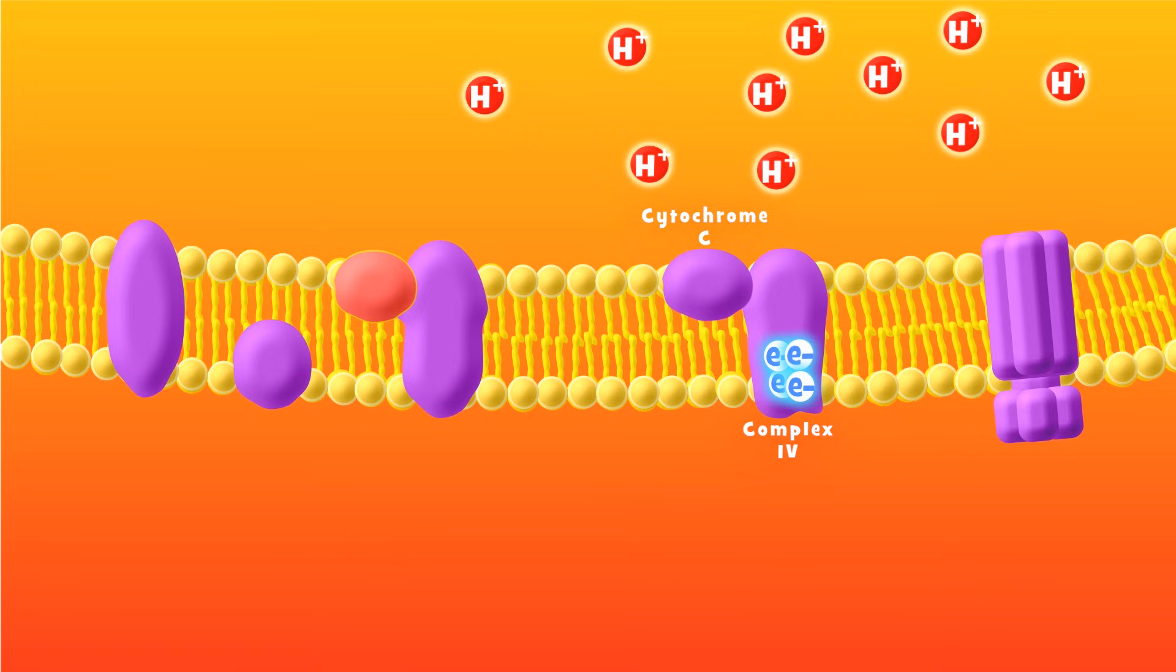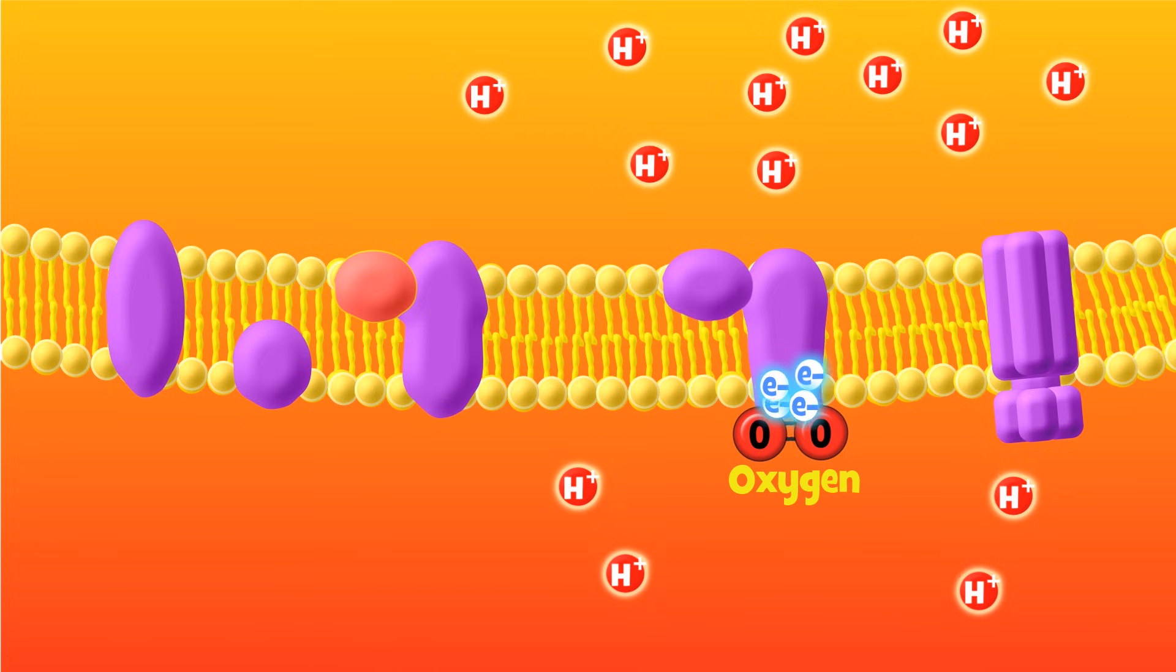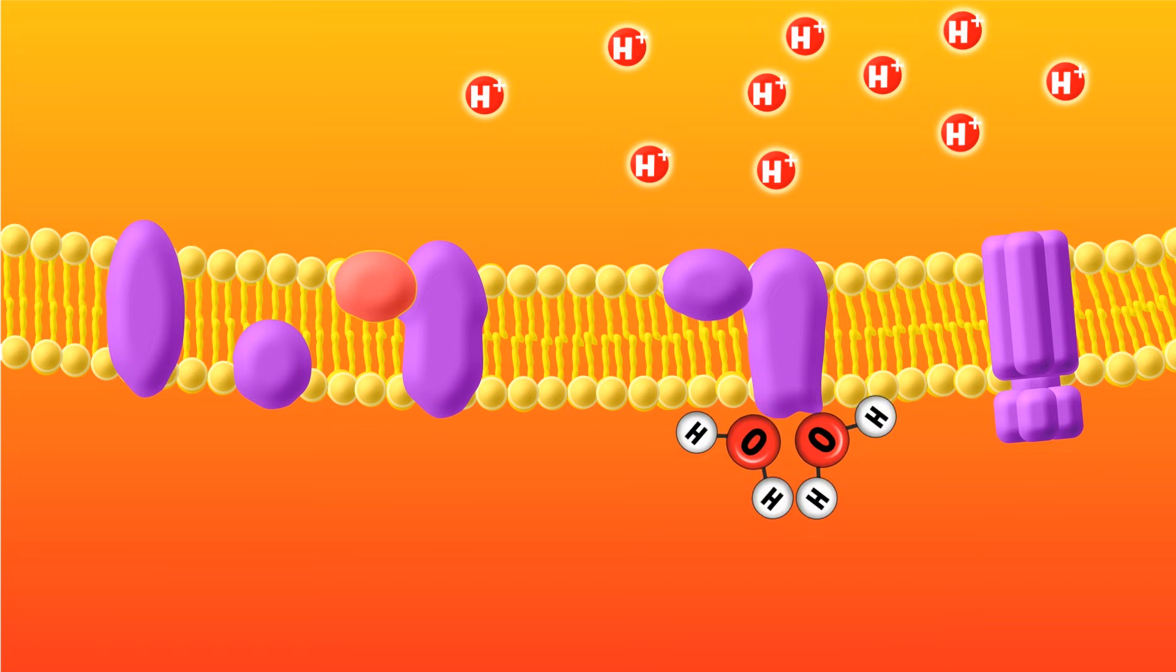Now the electrons need somewhere to go, a final destination to complete their journey. Fortunately, you breathe, and oxygen comes to the rescue. Oxygen accepts the electrons, as well as hydrogens from the matrix, making water. This is the reason why you breathe all day, every day.